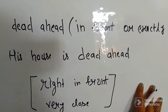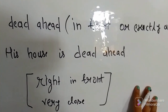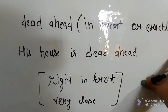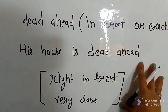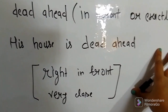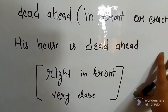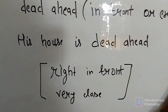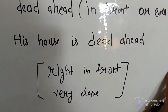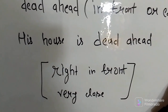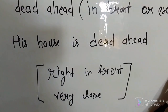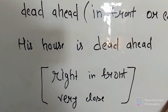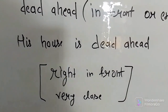Number one is 'dead ahead.' It means in front or exactly ahead. For example: 'His house is dead ahead.' That means it is right in front or very close right now. So we can say: 'Where are you going? His house is dead ahead.' That is the meaning of dead ahead.